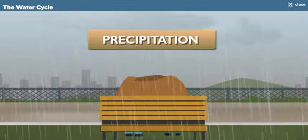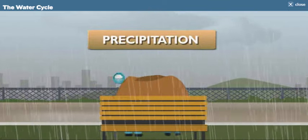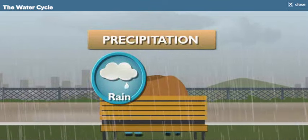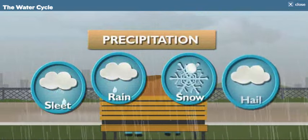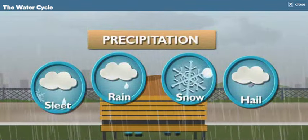Precip-what? Precipitation. It's another word for rain. Actually, for any form of water that falls from the sky. What do you mean like snow, sleet, or hail? Yup, they're precipitation too.